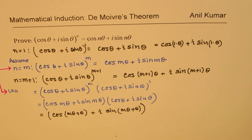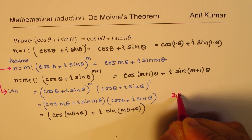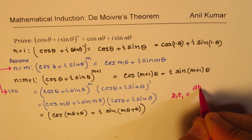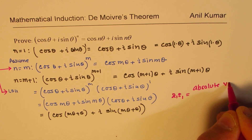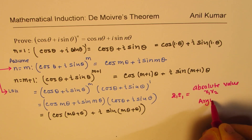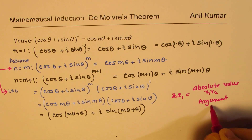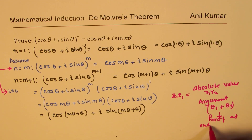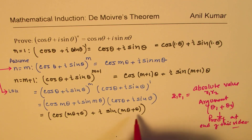The result used here is that the product of two complex numbers has absolute value r₁·r₂ and argument θ₁ + θ₂. At the end of this video, I'll provide the proof for this.